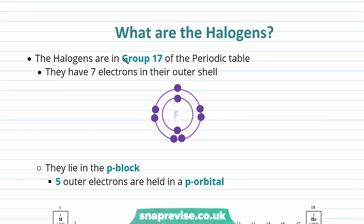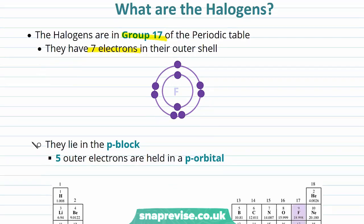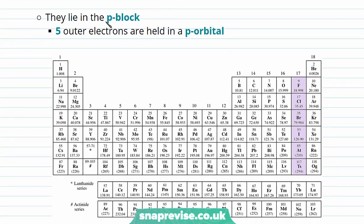The halogens are in group 17 of our periodic table and they have seven electrons in their outer shell. Here we have an example of fluorine, one of our halogens. Fluorine has nine electrons — two in its innermost shell and seven in its outermost shell. Our halogens lie in the P block of our periodic table, as the fifth column along, so they have five outer electrons held in a P orbital.